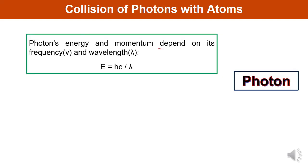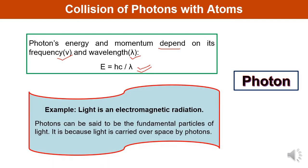A photon's energy and momentum depend on its frequency and wavelength. Mathematically, energy is represented by the formula E equals hc upon lambda, where c is the velocity of light and lambda is the wavelength. Light is an electromagnetic radiation, so photons can be said to be the fundamental particles of light — light is carried over space by photons. With these basics, you will be able to understand the topic of collision of photons with atoms.